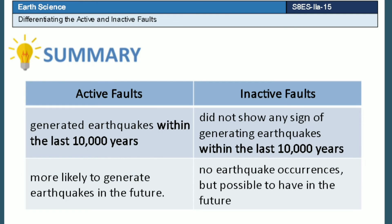To summarize: active faults are faults that generated earthquakes within the last 10,000 years and are more likely to generate earthquakes in the future. Inactive faults are faults that did not show any sign of generating an earthquake within the last 10,000 years, but they can still generate earthquakes in the future.